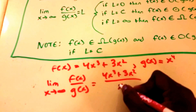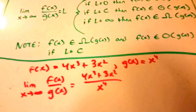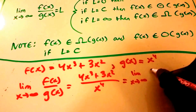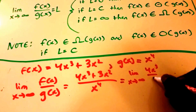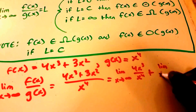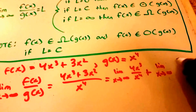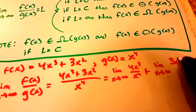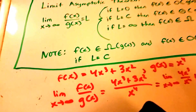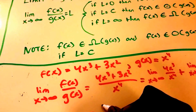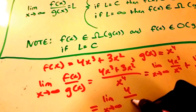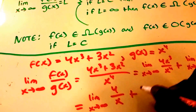This is equal to the limit as x approaches infinity of 4x³ over x⁴, plus the limit as x approaches infinity of 3x² over x⁴. Simplifying, we get the limit as x approaches infinity of 4 over x, plus the limit as x approaches infinity of 3 over x².